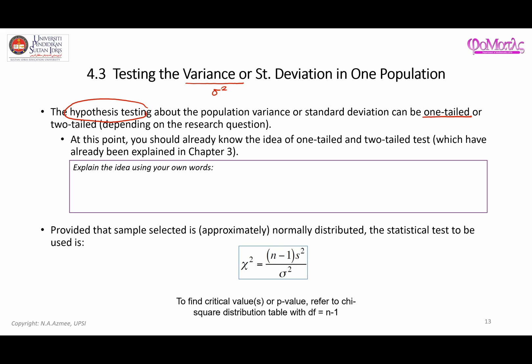In general, hypothesis testing about population variance can be either one-tailed or two-tailed. This really depends on the research question or the problem given to you. At this point, you should already know the difference between one-tailed and two-tailed tests, and you have to be able to explain the difference between these two tests using your own words.